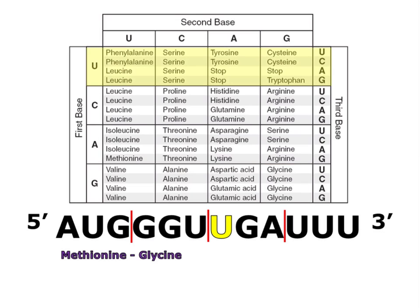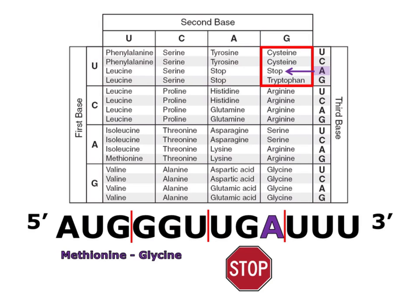Our third codon starts with U, so I've highlighted the U row in the codon chart. The second base in this codon is G, so I've highlighted the G column. The box outlined in red is where I'll find my answer, because that's where the U row and the G column overlap. My third base is A, so that tells me that this is a stop codon. Notice that there were three different options in this box — that's why it's very important that you understand how to use that third base to determine the correct answer.